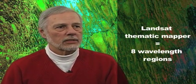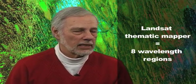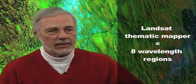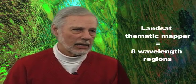If you have n spectral bands, then you've got n values for each one of those pixels. Landsat Thematic Mapper, for instance, has seven spectral bands — actually eight, including a panchromatic band — so it records eight different wavelength regions for every pixel in the scene.